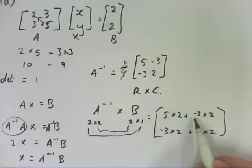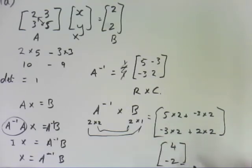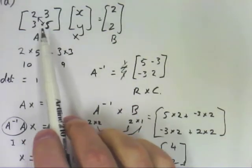So we get 10 minus 6, so that's 4. And 6 minus 6 plus 4, which is minus 2. So that's the solution to that simultaneous equation.